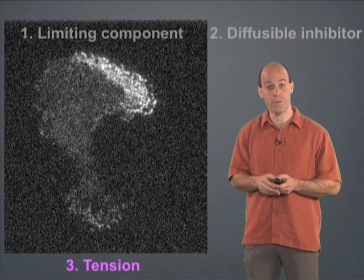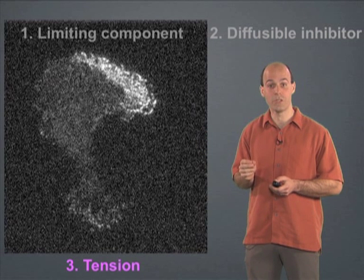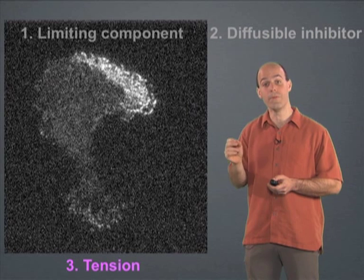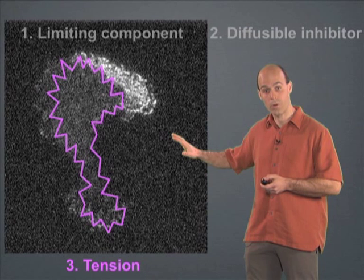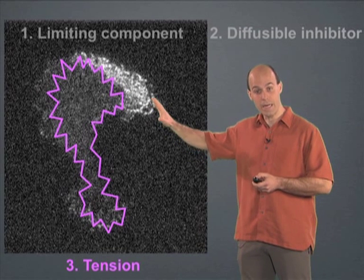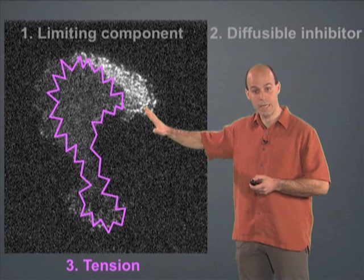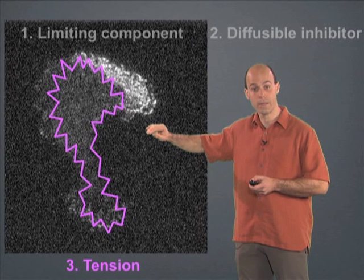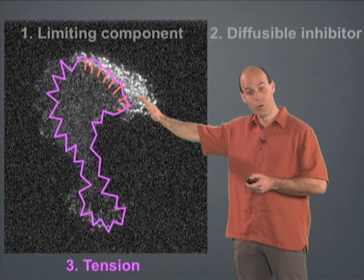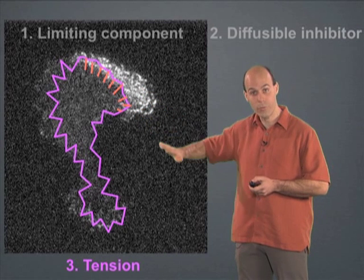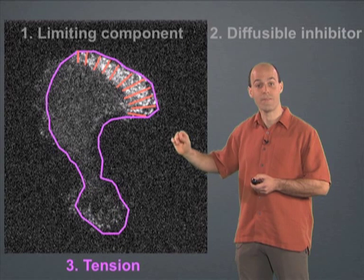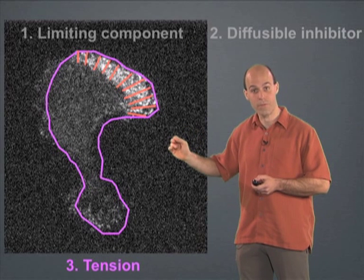An alternative to these diffusion-based models is a model in which physical forces rather than the movement of molecules transmits information from front to back. In this tension-based model, the cell initially has a low tension in the cytoskeleton and/or plasma membrane. Protrusion at the leading edge stretches this plasma membrane and/or cytoskeleton. That tension is transmitted throughout the cell surface and that inhibits formation of secondary fronts and the spread of the existing front.